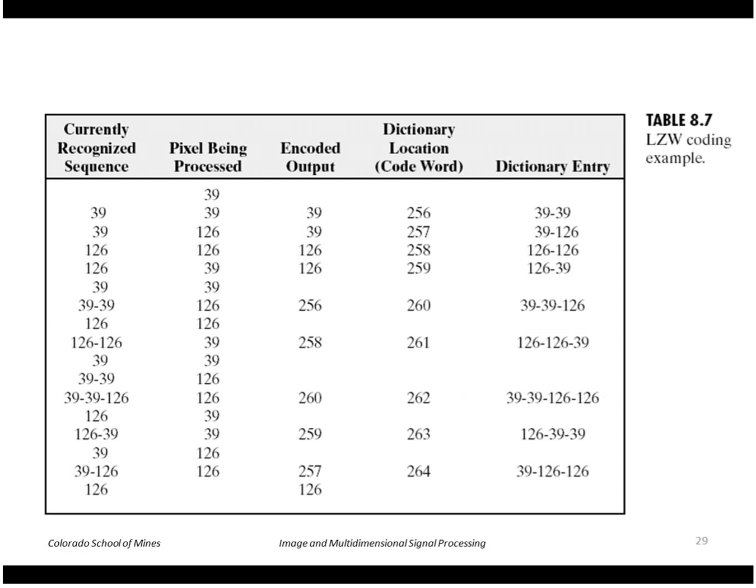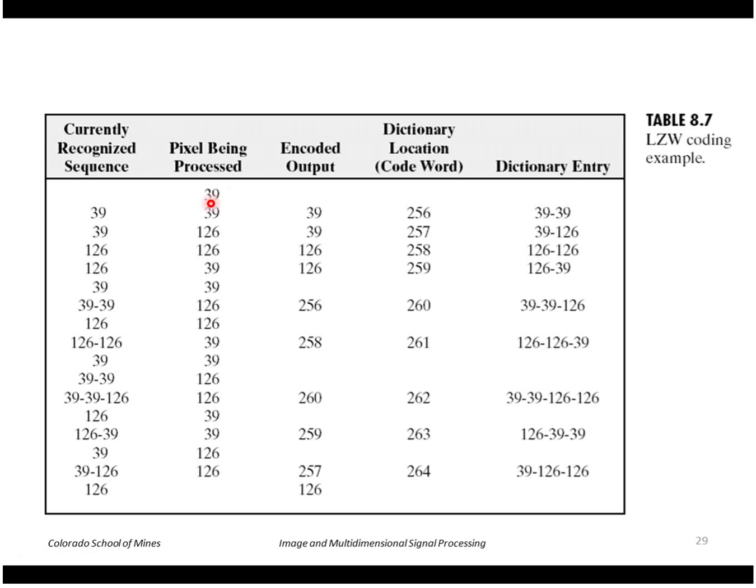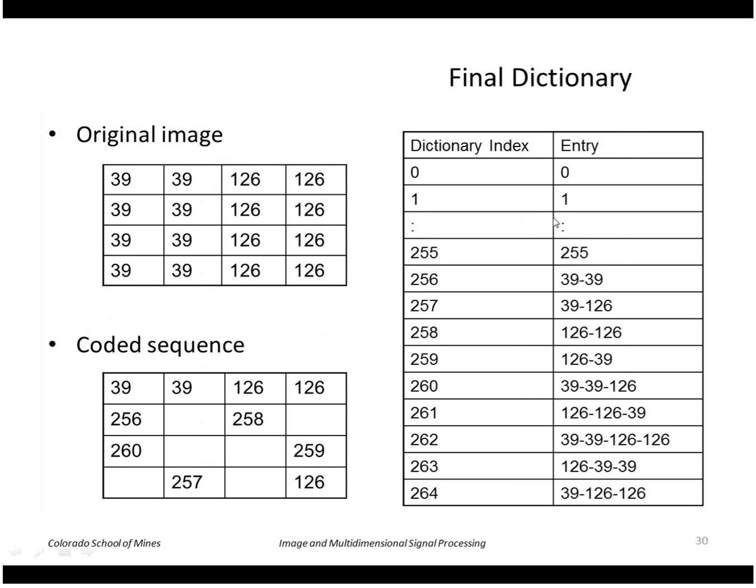Next, what we do is look through the image point by point. We'll see the value 39 first, and it's just a 39. Next it'll visit the next 39 and it will output a 39, but it will also create an entry for that sequence in case it sees it again. So code word 256 is now assigned to the sequence 39 39 as shown here.